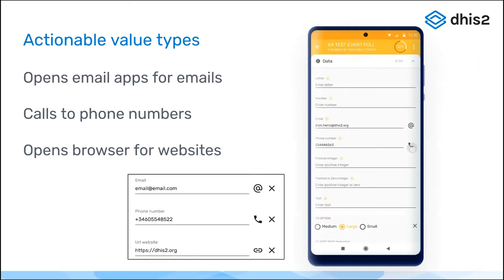Next, we have implemented actionable value types. The value types that are actionable are email, phone number, and link. When you use any of these value types in your tracked entity instance attributes, you will see a small icon in the form. When you tap the icon, the related application will open — for example, tapping the phone icon opens the phone app or lets you choose between phone, Skype, or whatever apps you have for making calls directly from the tracked entity instance details. No additional configuration is needed.